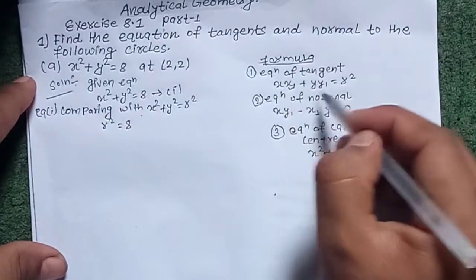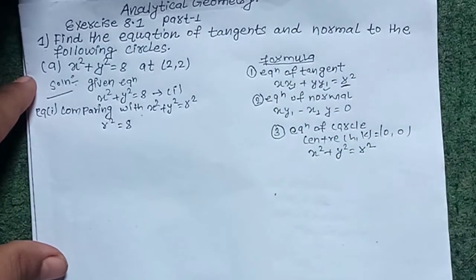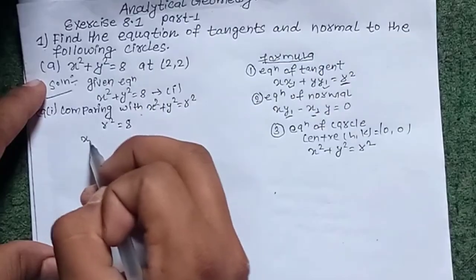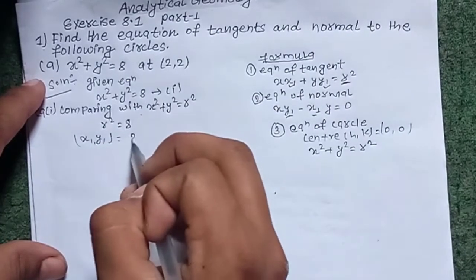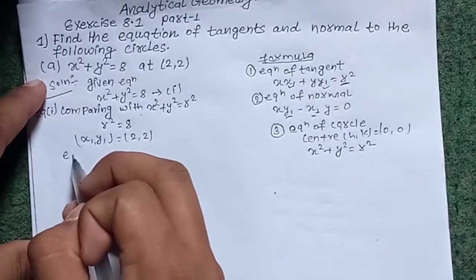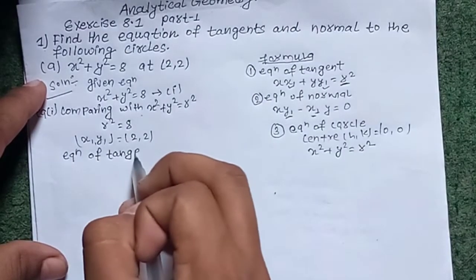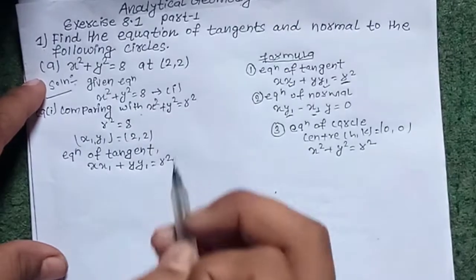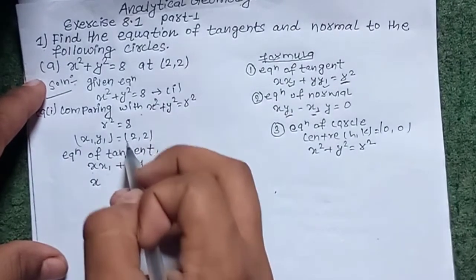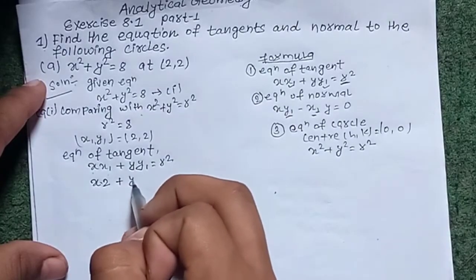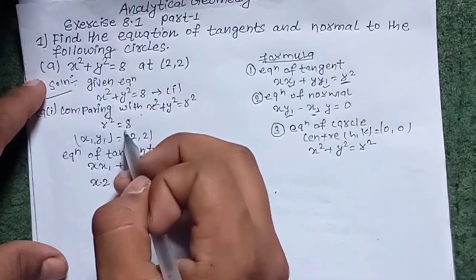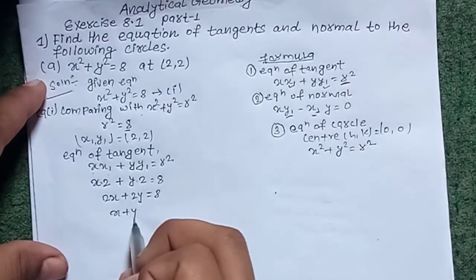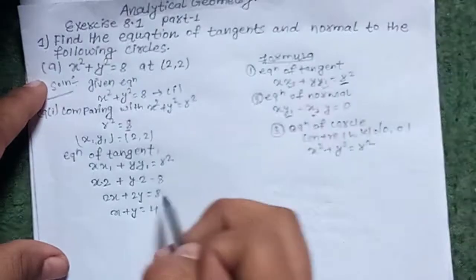Using the formula, the point is (x₁, y₁) = (2, 2). Equation of the tangent: xx₁ + yy₁ = r², so x·2 + y·2 = 8, giving 2x + 2y = 8. Dividing by 2 common: x + y = 4.